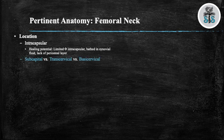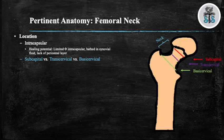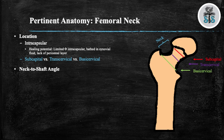Femoral neck fractures are divided into three subtypes: subcapital, transcervical, and basocervical. This picture is a representation of these approximate locations. We will now go over the neck to shaft angle, which is a line drawn from the center of the femoral head and a line drawn down the femoral shaft. Where these two lines intersect is also known as the neck shaft angle, which is approximately 130 degrees.